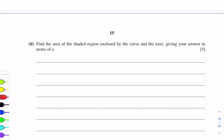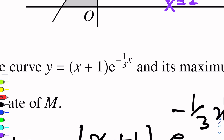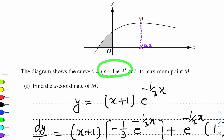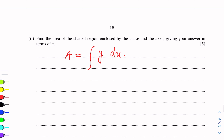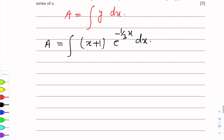The area formula requires integrating y with respect to x. Here y is (x+1)·e^(-1/3 x). So we need to find the integration of (x+1)·e^(-1/3 x) dx. The limits we will determine after. Since there is a product of two functions inside the integral, we will use integration by parts.